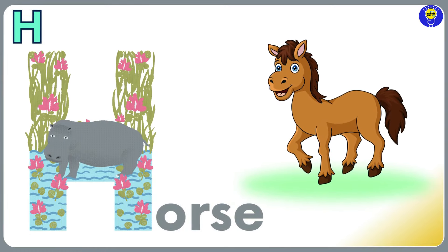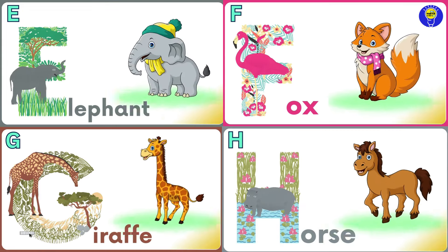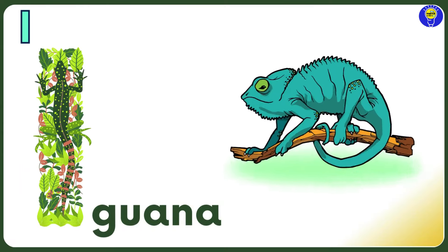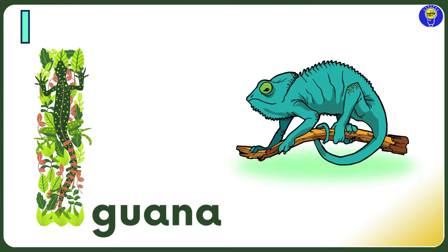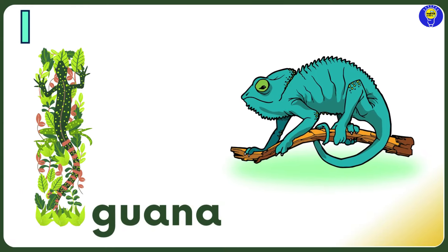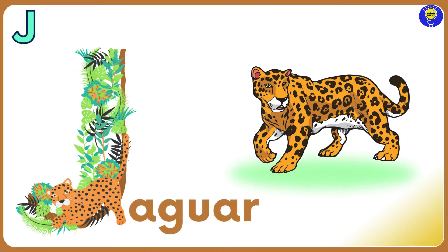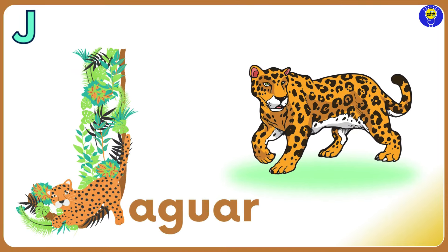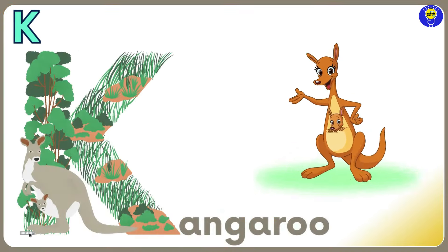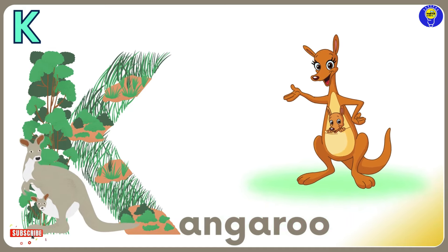H is for Horse. H, H, Horse. I is for Iguana. I, I, Iguana. J is for Jaguar. J, J, Jaguar.